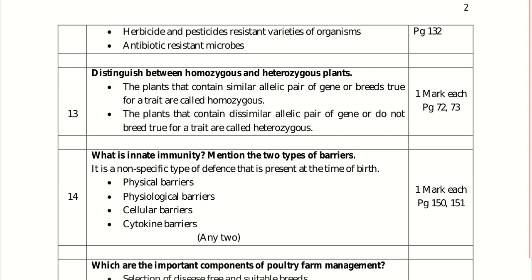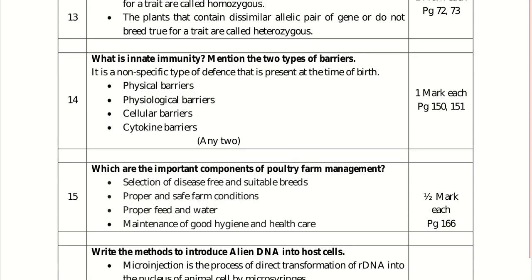The nonspecific type of defense present at the time of birth is termed as innate immunity, also called inborn immunity. There are four types of barriers, of which any two can be written: physical barriers, physiological barriers, cellular barriers, and cytokine barriers.